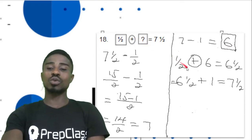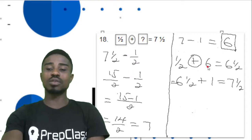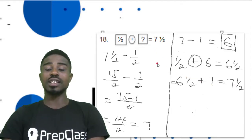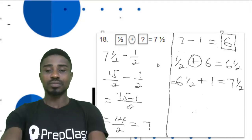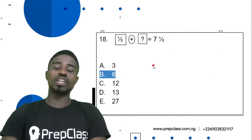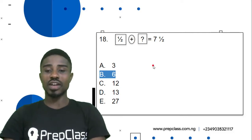Now to try it out, we are going to say half plus 6 would give us 6 and a half. 6 and a half plus 1 would give us 7 and a half. So our correct answer for question 18 is 6. Let's check it out. Question 18, option B, 6 is our correct answer. Let's look at the next question.